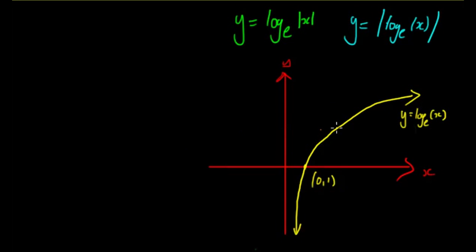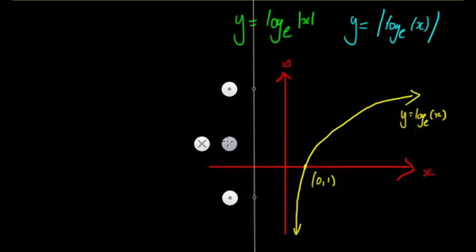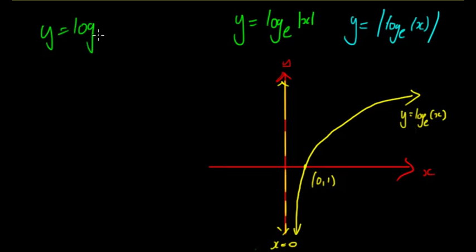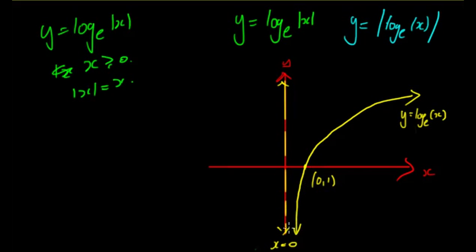To begin, we'll look at the logarithm graph. We have the standard y = log_e(x) graph with the intercept at (1, 0) and the asymptote at x = 0. For y = log_e|x|: when x ≥ 0, modulus x is just x, so it's the exact same graph and the same function. Notice y can still be negative because we're not taking the modulus of the entire function, just of x. So here you have the exact same point (1, 0) and it looks the same.